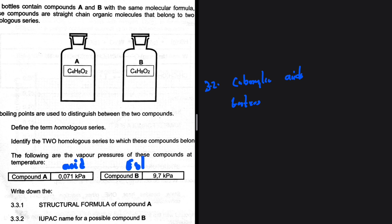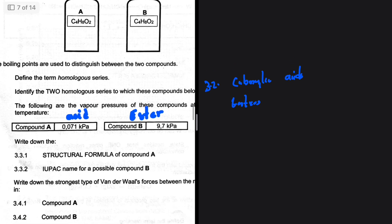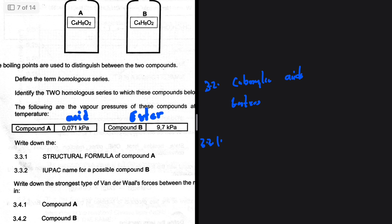A compound with the weaker intermolecular forces between the two. So 3.3.1 structural formula of compound A. So we know that compound A is a carboxylic acid with four carbons.